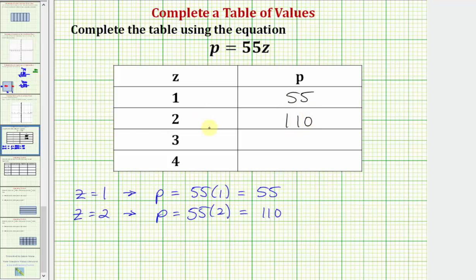Next we have z equals three. So when z equals three, using our equation we'll have p equals — now 55z is going to be 55 times three — which equals 165.